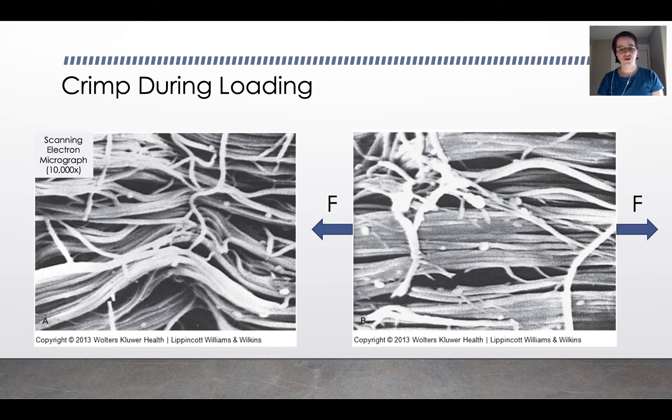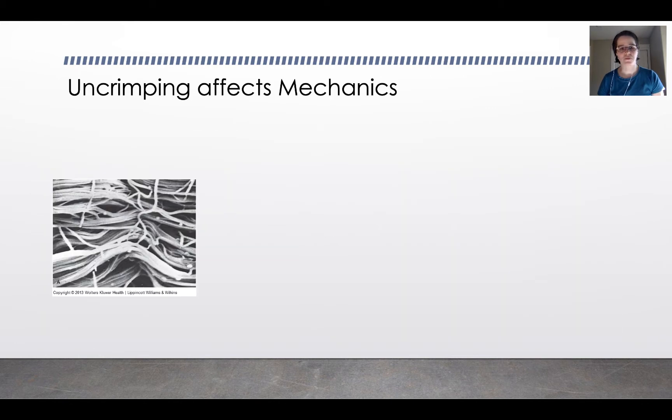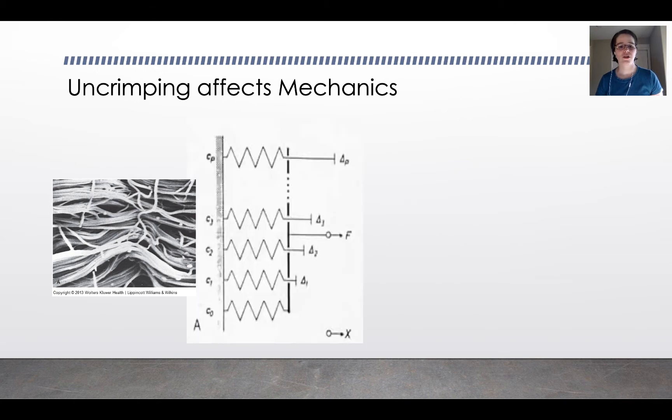And that initial straightening out is an important feature of collagen, the mechanical behavior of collagen. Let's consider the crimped fibers. We're going to model each of the crimped fibers as a spring. Remember that collagen has these kind of staggered repeating units that make up its structure. If we think about each one of them as a spring that has a slightly different length, then when we apply a load to the collagen, we're going to stretch different springs at different times.